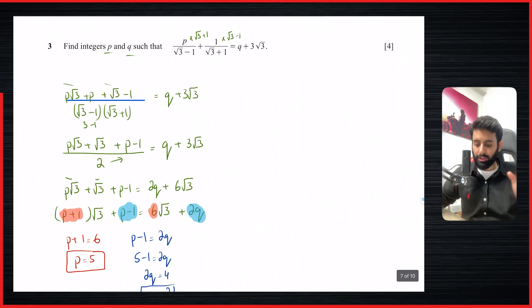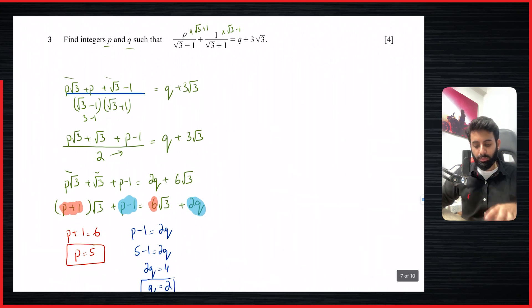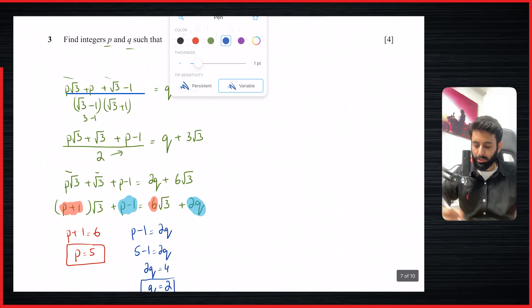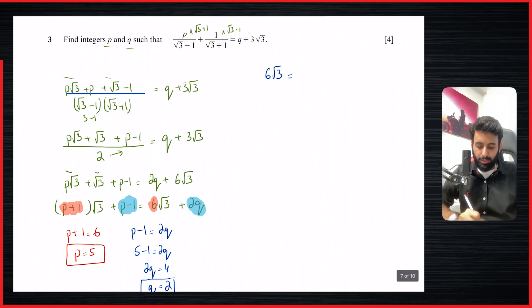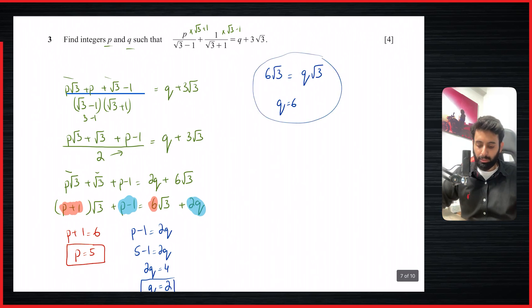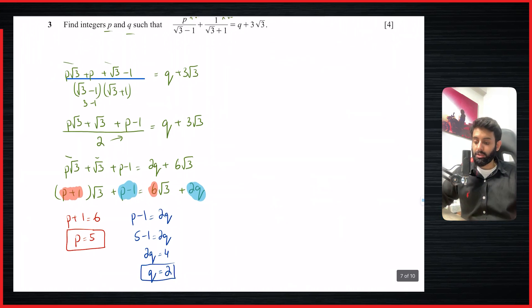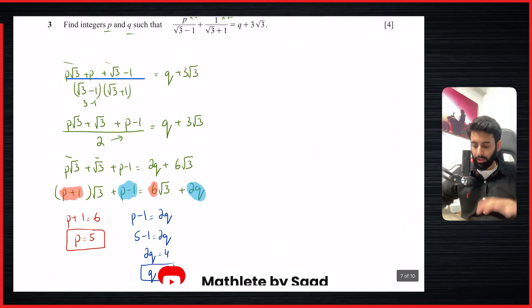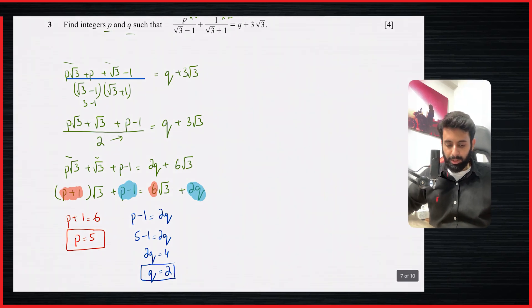This method is called comparison — or comparing coefficients. Normally this term is used when variables are involved, but the method is the same: comparing what we have on the left-hand side with the right-hand side. For example, if 6 root 3 equals q root 3, it's obvious that q equals 6. Let me know in the comments if you're already familiar with this method. That's it for this video — see you in the next one with more complex past paper questions. Take care, bye.